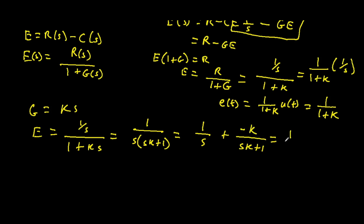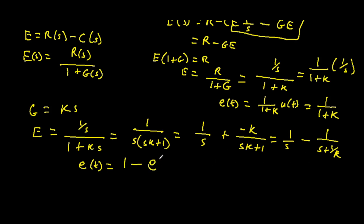That gives us 1 over S minus 1 over (S + 1/K). Taking inverse Laplace transforms, the error function is E of T equals 1 minus exponential of minus T over K. To find the steady-state error, we take the limit as time heads towards infinity. The exponential of negative infinity gives us 0, so the steady-state error equals 1. No matter what your K is, the steady-state error is not dependent on K whatsoever.